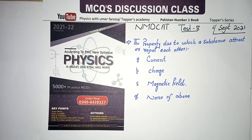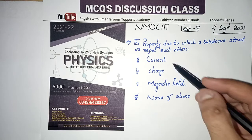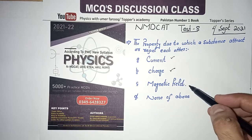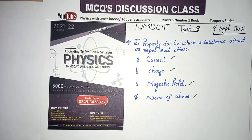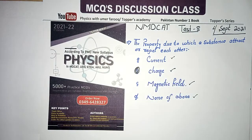For September 2021: The property due to which a substance attracts or repels others is called — current, charge, magnetic field, or none of the above? The correct option here: is it current, charge, magnetic field, or electric field? The correct answer is charge.